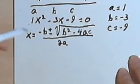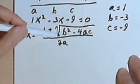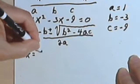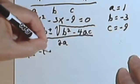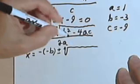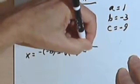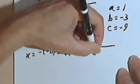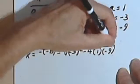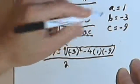And now what we're going to do is take these values, the a, b and c values, and plug them in where I have an a or a b or a c in the quadratic formula. So I'll get x = -(-3) ± √((-3)² - 4(1)(-9)) / 2(1).